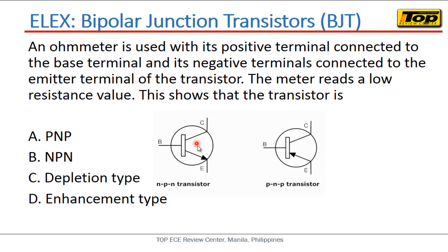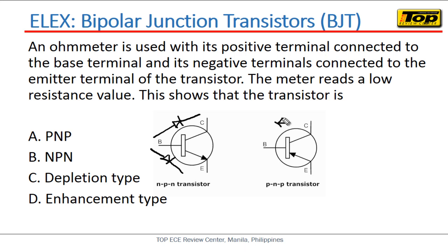Being a 2 PN-junction device, a BJT looks like it has back-to-back diodes. For an NPN transistor, the collector and base form one PN junction, and the base and emitter form another PN junction. For a PNP, the same applies but reversed — there is a diode between the base and collector and also between the base and emitter.